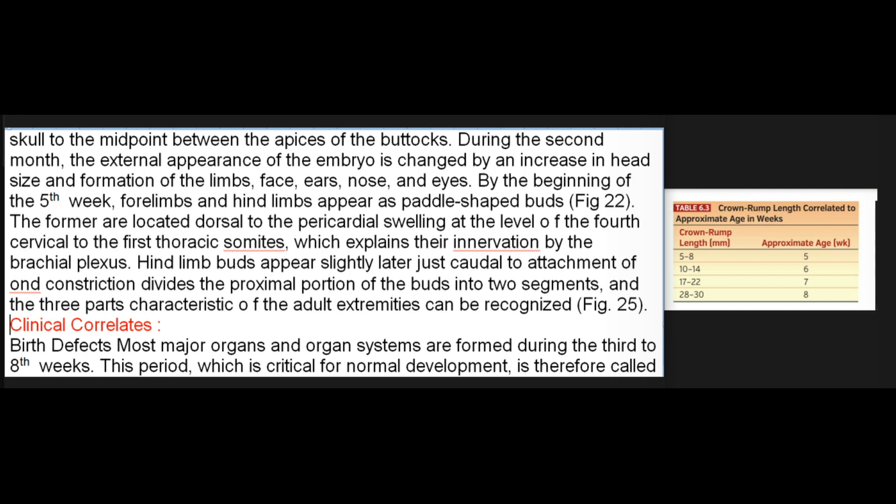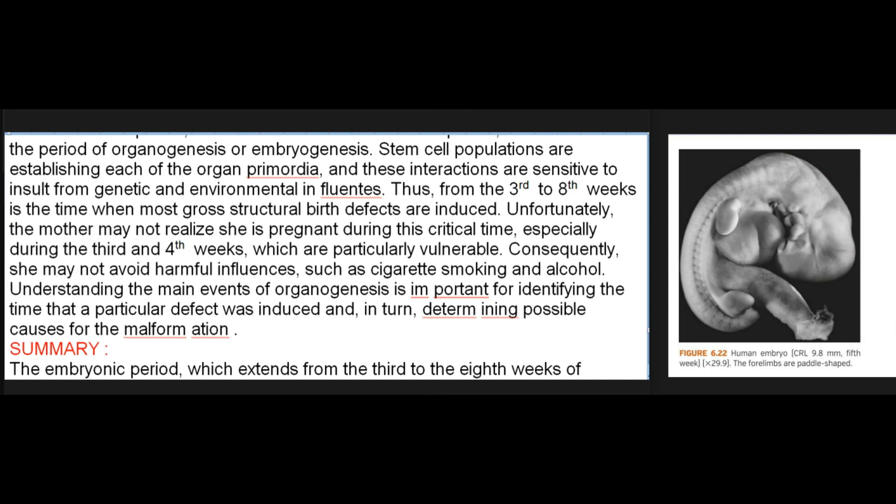Clinical correlates — birth defects: Most major organs and organ systems are formed during the third to eighth weeks. This period, which is critical for normal development, is therefore called the period of organogenesis or embryogenesis. Stem cell populations are establishing each of the organ primordia, and these interactions are sensitive to insult from genetic and environmental influences. Thus, from the third to eighth weeks is the time when most gross structural birth defects are induced. Unfortunately, the mother may not realize she is pregnant during this critical time — especially during the third and fourth weeks, which are particularly vulnerable — and consequently she may not avoid harmful influences such as cigarette smoking and alcohol. Understanding the main events of organogenesis is important for identifying the time that a particular defect was induced and, in turn, determining possible causes for the malformation.